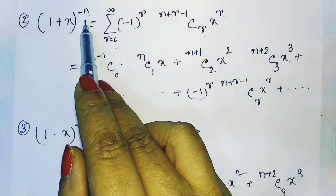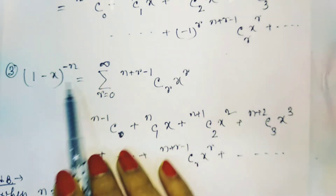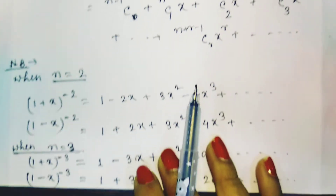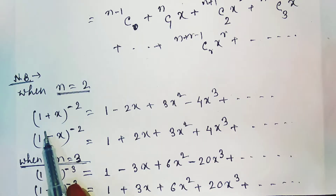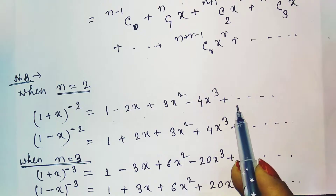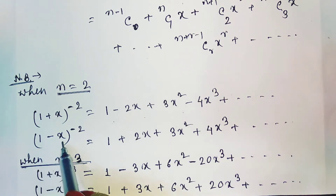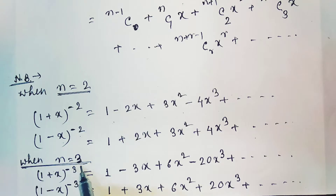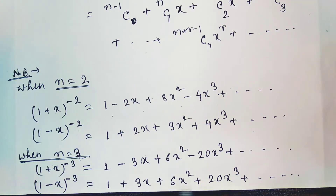Instead of (1 + x)^(−n), if it is (1 − x)^(−n), then we get the same type of series, only the alternating plus-minus signs will not be there. For the specific case n = 2: (1 + x)^(−2) = 1 − 2x + 3x² − 4x³ + ··· to infinity. If it is (1 − x)^(−2), then all terms are positive. Similarly for n = 3 we get those two series, and for n = 1 and n = 4 we can find the respective infinite series.